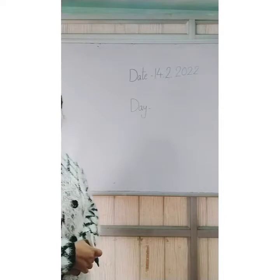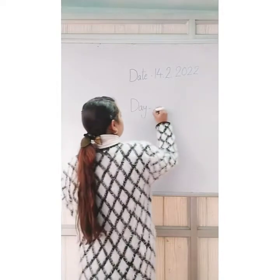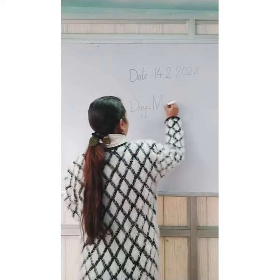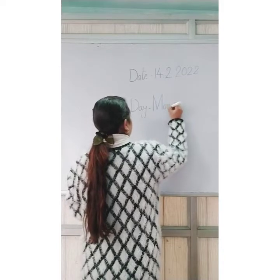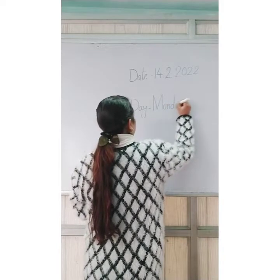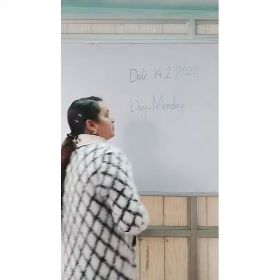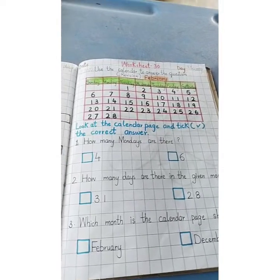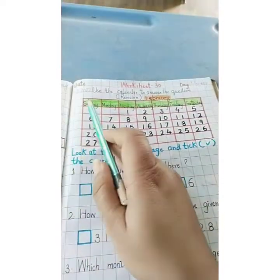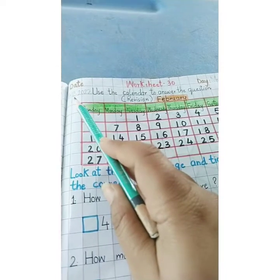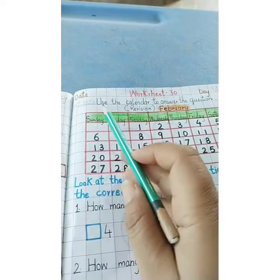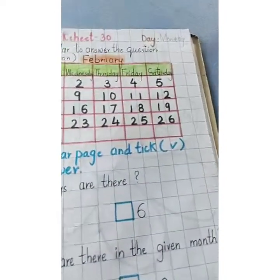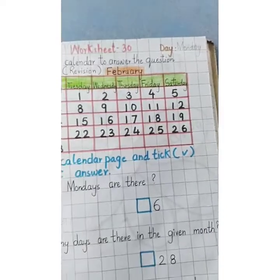And what day is it today? Today is Monday. How to write? M-O-N-D-A-Y is Monday. So today's date is 14th of February 2022 and the day is Monday.